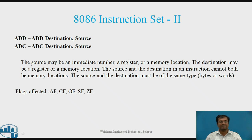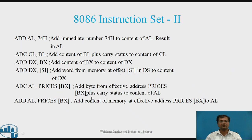After execution of the addition instruction, these flags are affected: Auxiliary Carry, Carry Flag, Overflow, Sign, and Zero Flag. Example: ADD AX, 74 — it adds immediate number 74 to the content of AL; result in AL. ADC CL, BL — it adds content of BL plus Carry Status to content of CL.